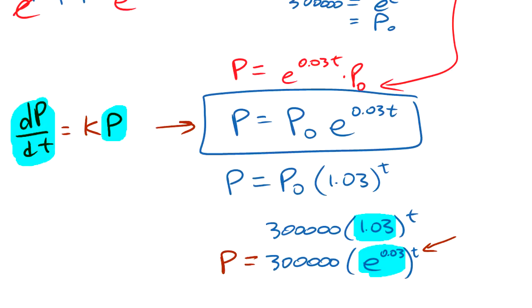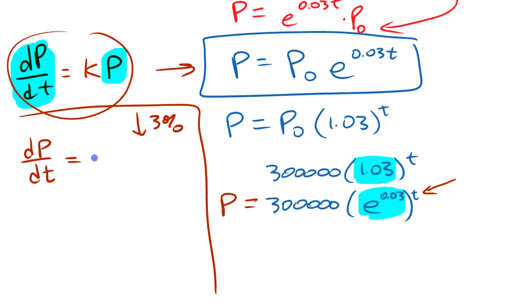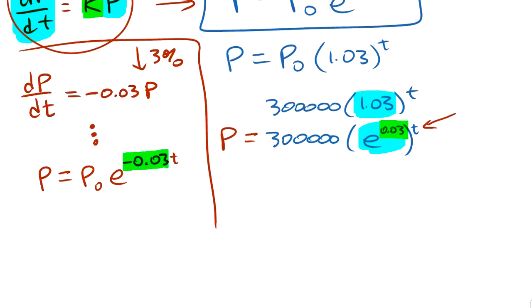You might say, what if the population was declining? If this population was declining at 3%, well, let's think about how that would be different here. The difference would have been that we would have started here. We would have said something like the rate of change of the population is, if it's going down at 3%, we could have said the rate of change is negative 0.03 times the population. If we went and solved that, what we would end up with is population is P₀e to the negative 0.03T. You would have got exactly the same equation, but this K factor up here, this value, would have been negative instead of positive.